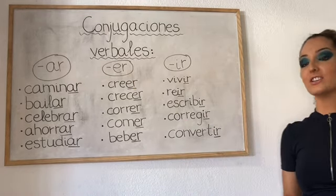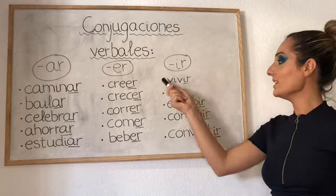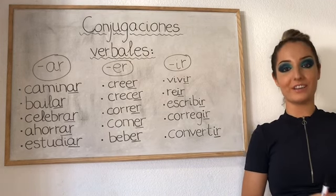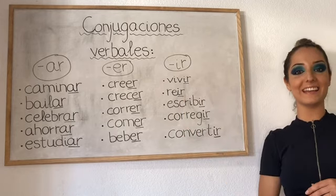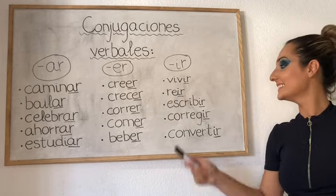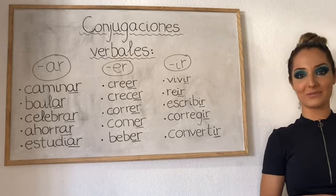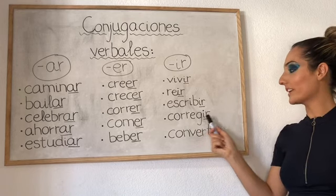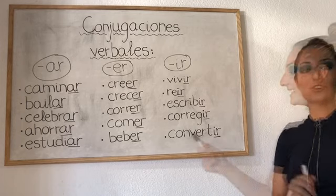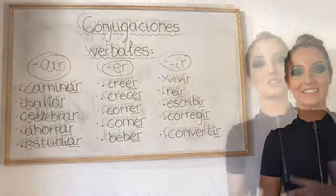And our third conjugation will be IR — the third and the last one. For example: VIVIR, to live; REÍR, to laugh; ESCRIBIR, to write; CORREGIR, to correct; CONVERTIR, to convert. So as you can see, our three conjugations are always going to be different from each other.